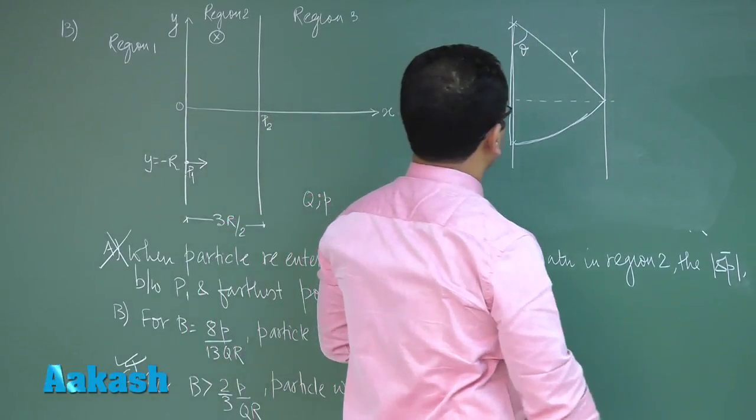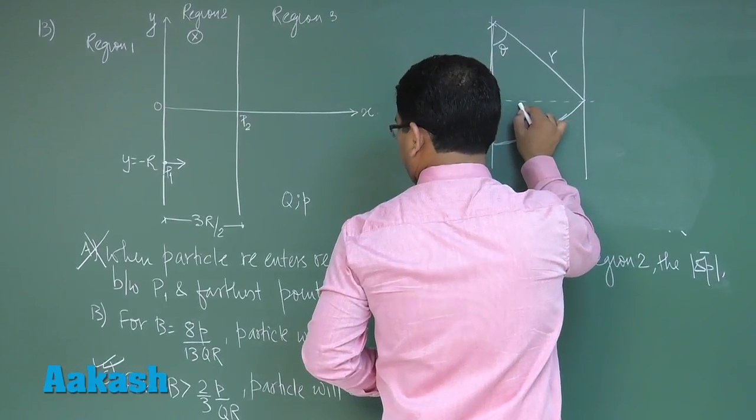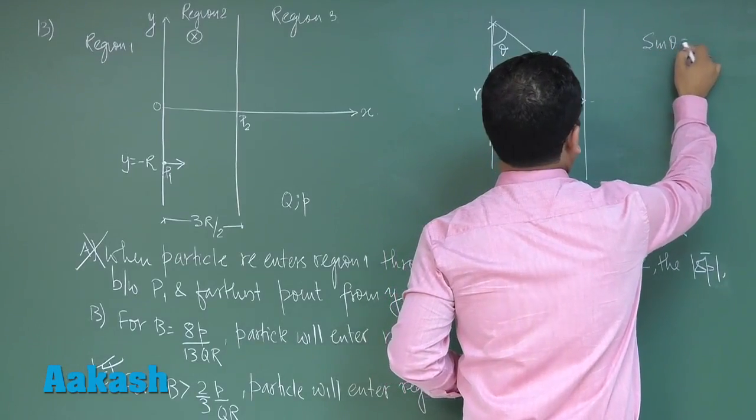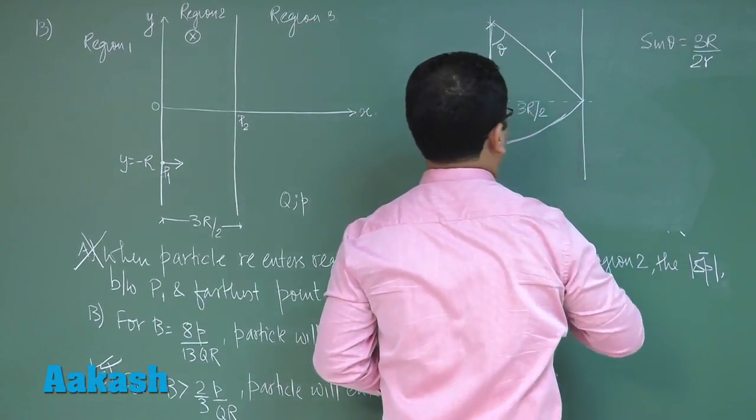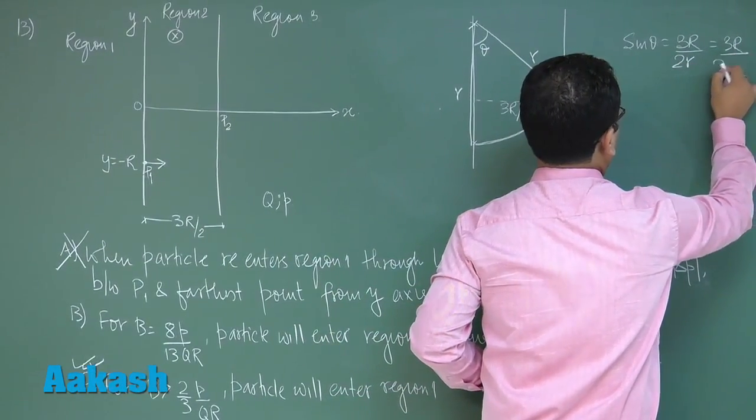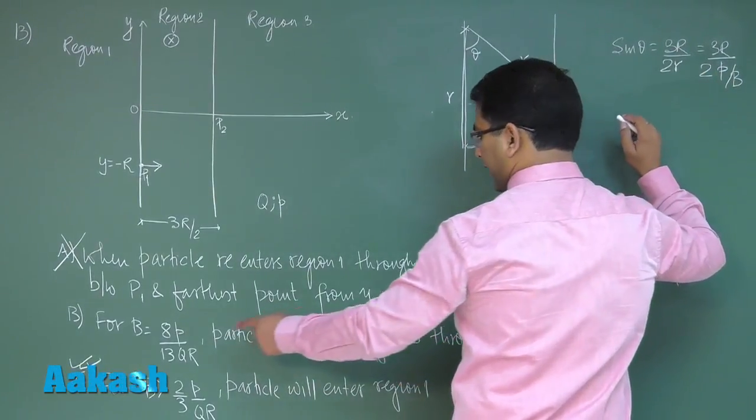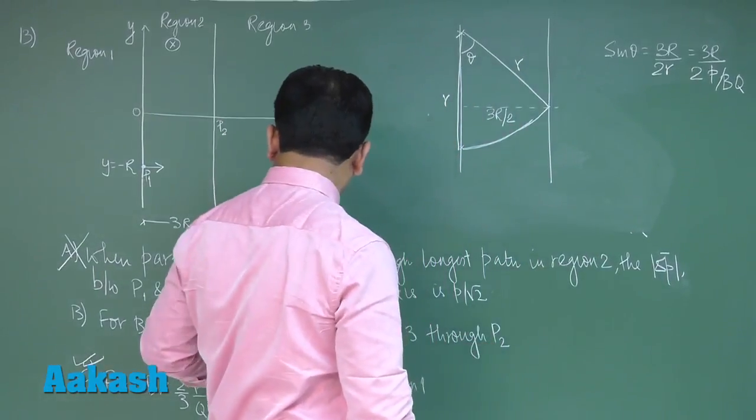And this angle would be theta. Now straightforward you could see that this is 3r by 2, and sin theta would be 3r by 2r, and small r can be written as 2p by bq. And that is the value.